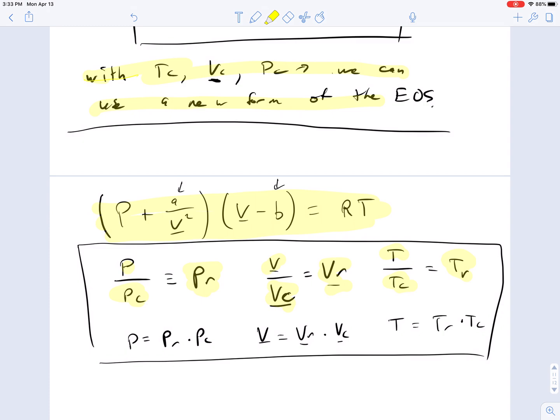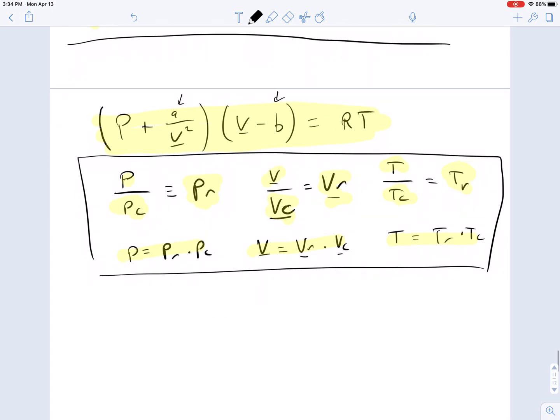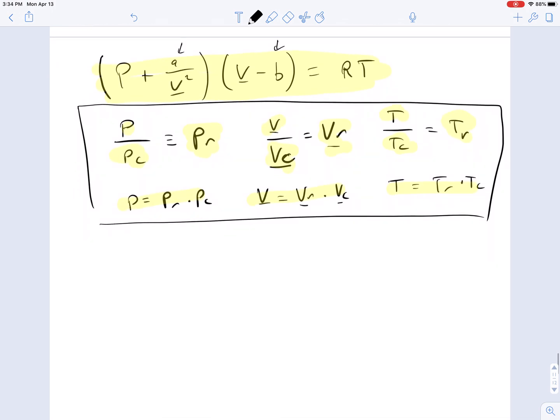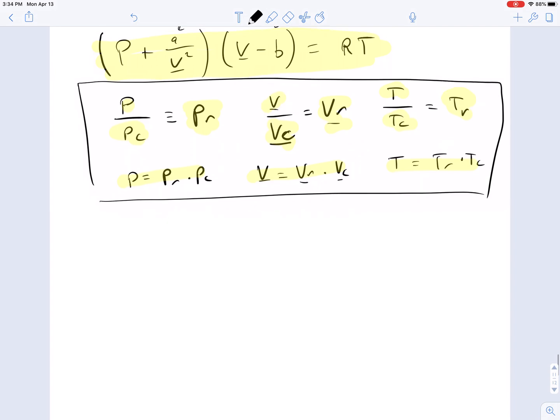You can go back to your original variables by simply multiplying through your reduced times the critical. Now this becomes useful, and it's another, this is the third time in the course that we've been through the process of non-dimensionalizing equations.